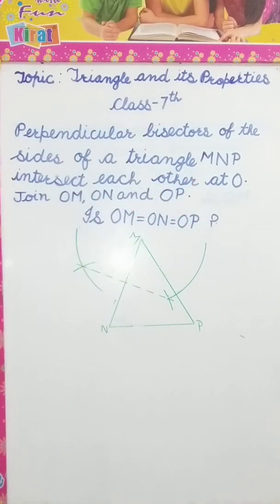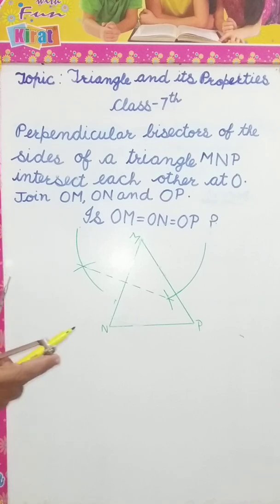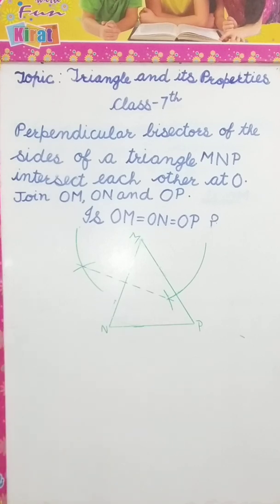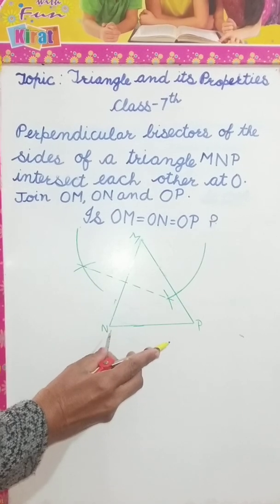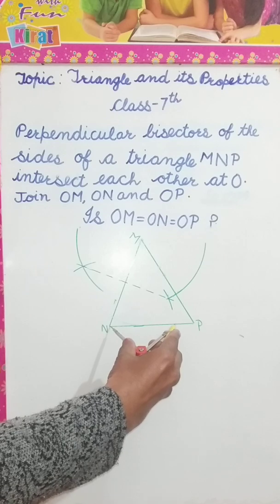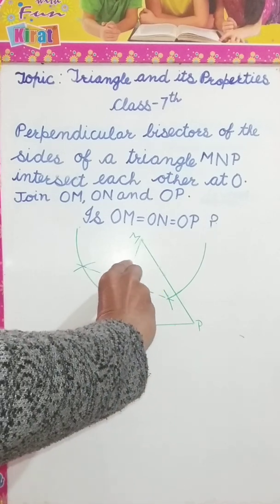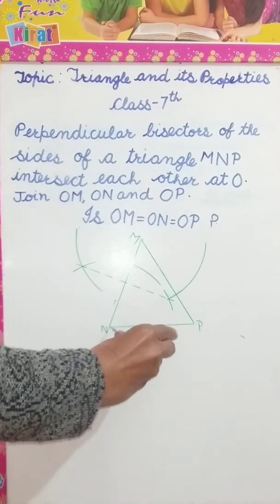Next, now let's draw a perpendicular bisector of NP. When I have to take perpendicular bisector of NP, so what I will do, I will take more than half of NP and taking N as a center, draw an arc.